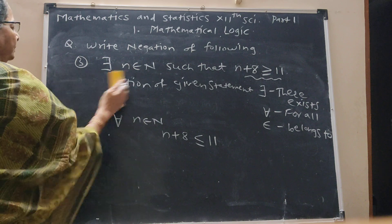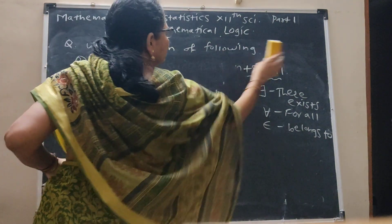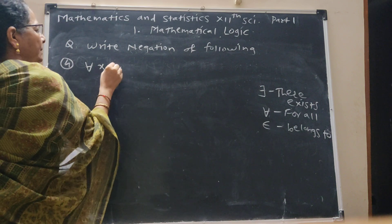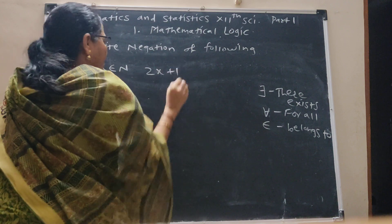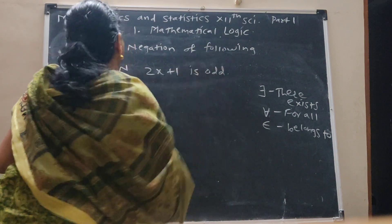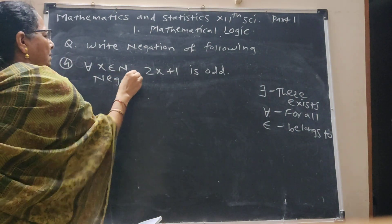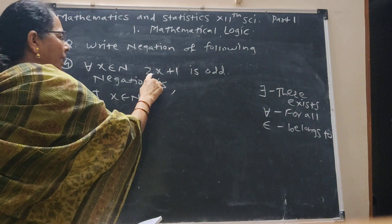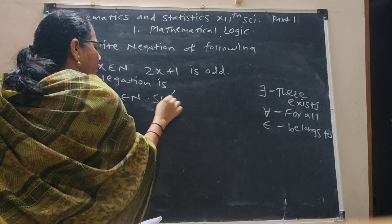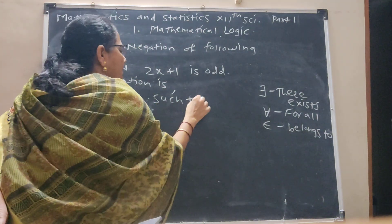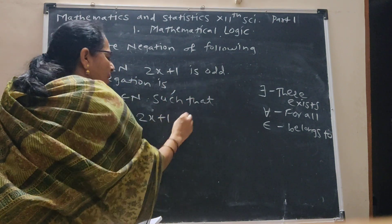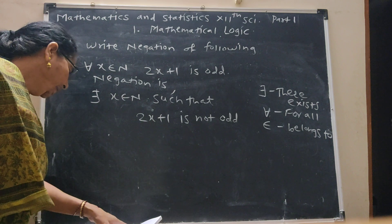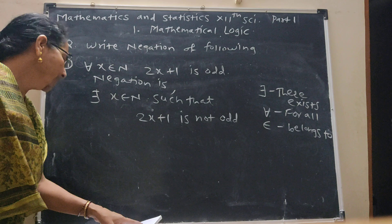Question number 4: for all x belonging to N, 2x plus 1 is odd. The negation is: there exists x belonging to N such that 2x plus 1 is not odd. When writing the negation, 'for all' changes to 'there exists' and we add 'such that', and the condition becomes its negation.